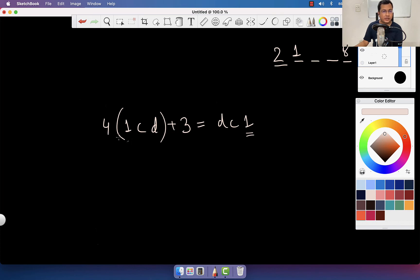d could be 5, 6, 7, 8, or 9. But let's check the last digit logic. This is 1cd, 4 times something plus 3, and what I get has the last digit 1. If the last digit is 1 after adding 3, this number has to be 8. That's the only way: 8 plus 3 gives 11. There's no other way to add 3 and get last digit 1.